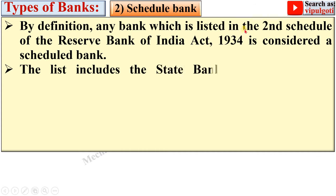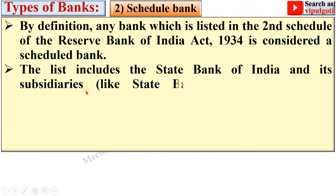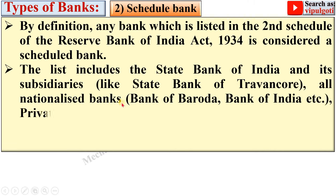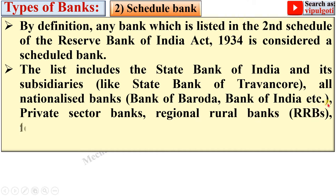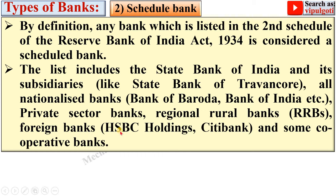Banks listed in the second schedule are called Scheduled Banks. The list includes the State Bank of India and its subsidiaries like State Bank of Travancore, all Nationalized Banks like Bank of Baroda and Bank of India, Private Sector Banks, Regional Rural Banks, Foreign Banks like HSBC and Citibank, and some Cooperative Banks. All of these are called Scheduled Banks because they are listed in the second schedule of the Reserve Bank of India Act 1934.